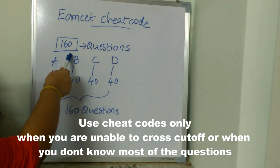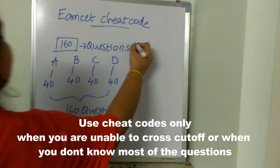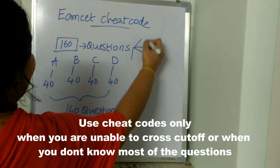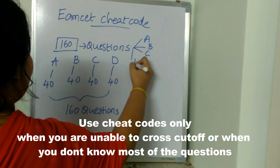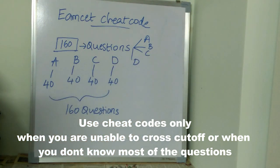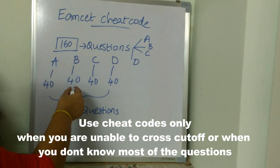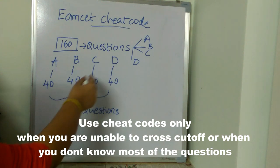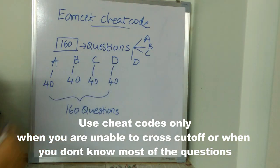There are 160 questions in the exam paper and the options for the questions will be A, B, C, and D. In the overall question paper, Option A will be the answer for 40 questions, Option B will be the answer for 40 questions, Option C will be the answer for 40 questions, and Option D will be the answer for 40 questions.